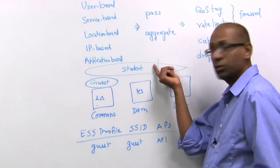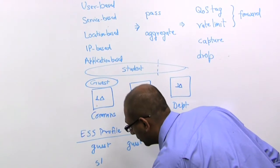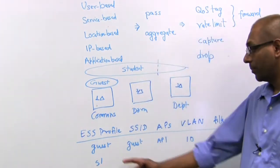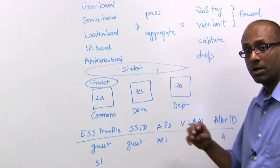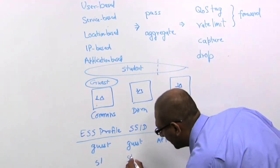Now we want to create two student profiles. So let's call this S1 and S2. Notice that even though the profiles are different, because we want the policy enforcement to be different on them, the advertised SSID itself is the same.